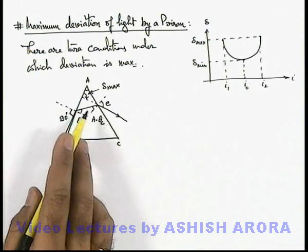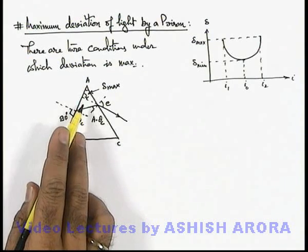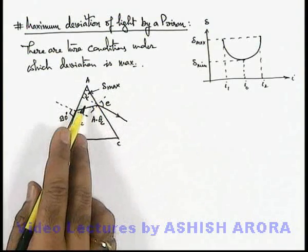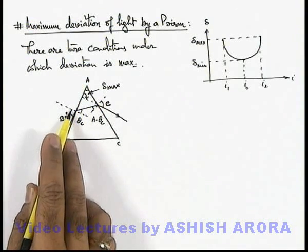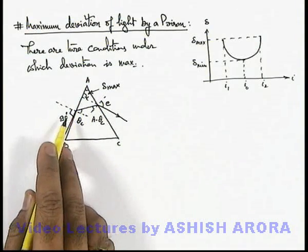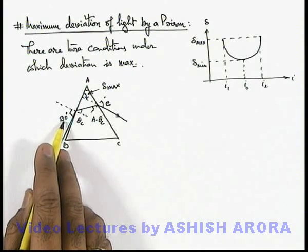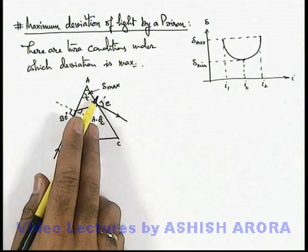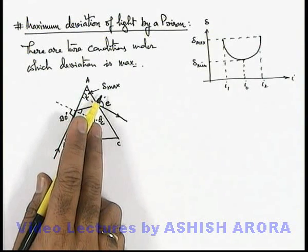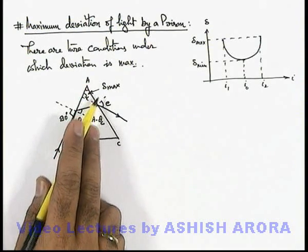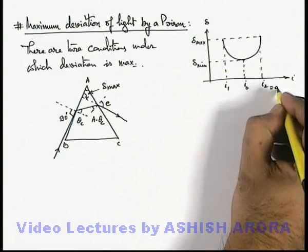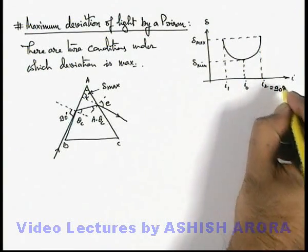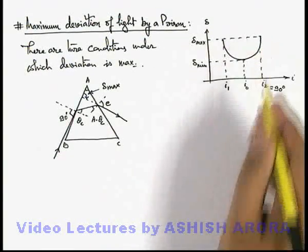So this is the situation where delta is maximum. Here we can see the angle of incidence — when it becomes 90 degrees, the value of deviation angle is maximum. So we can write: the maximum value of incidence angle should be 90 degrees when the value of delta is maximum.